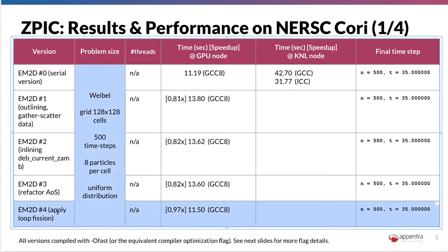You can see that after fission, we reduce almost two seconds in the serial compilation running on the same machine with the same flags. So doing the code transformations properly in the correct order, including inlining as asked by Kiran, can lead to these results. Doing it randomly without good criteria can increase compilation times and even decrease the quality of the code generated by the compiler.